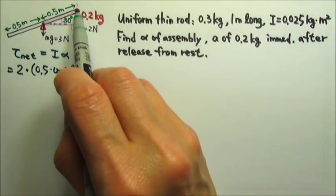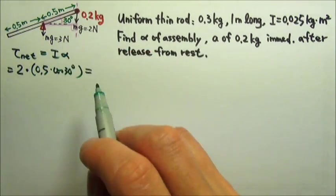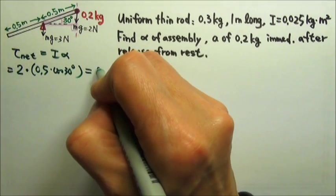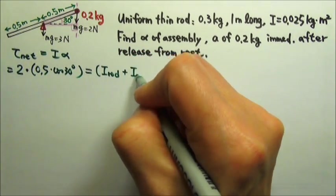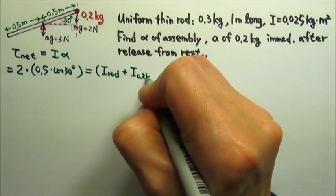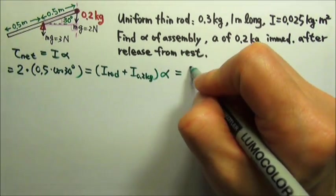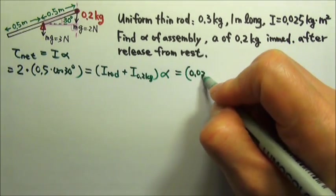There are two parts in this assembly: the rod and the point mass. So the I of the system includes the I of the rod and the I of the 0.2 kilograms. The rotational inertia of the rod is given as 0.025.